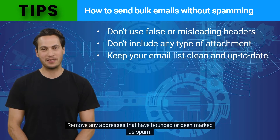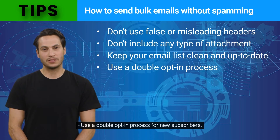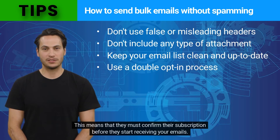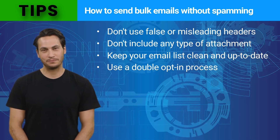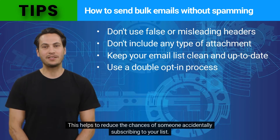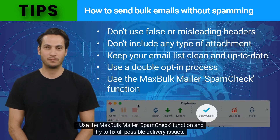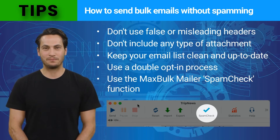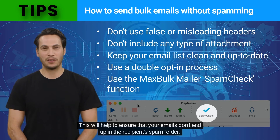Remove any addresses that have bounced or been marked as spam. Use a double opt-in process for new subscribers, meaning they must confirm their subscription before they start receiving your emails — this helps reduce the chances of someone accidentally subscribing to your list. Use the Max Bulk Mailer spam check function and try to fix all possible delivery issues to help ensure your emails don't end up in the spam folder.